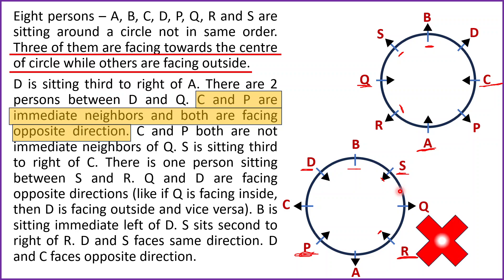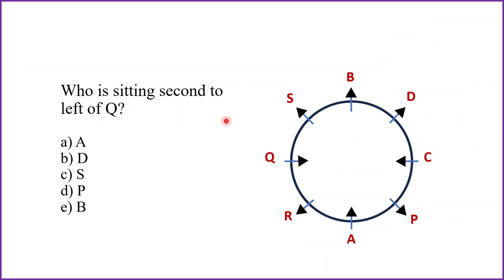Case 1 is the correct circular seating arrangement. Now let's answer the questions. Who is sitting second to the left of Q? Q is facing inside the center, so the upper part of the circle is the left side of Q. Second to the left of Q — first is S, second is B — so B is sitting second to the left of Q. The answer is option E, which is correct.